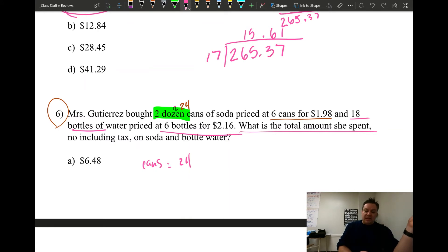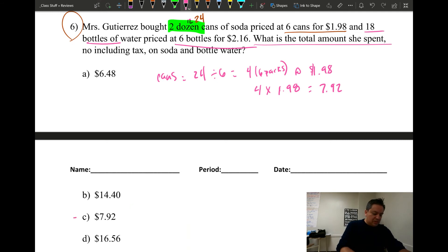Six cans of soda for $1.98. She bought 24 cans, so we need to do something right there before we know how much she spent for soda, and then something similar for the water. Because we know she got 18 bottles, but the price is six bottles for $2.16. So first of all, cans: 24. Now she's gonna pay $1.98 for six of them, for six cans, so we gotta divide this by six in order to know how many six-packs she got, right? When you divide that, you get four. Now four six-packs at $1.98 per six, right? So all we gotta do is multiply four times $1.98, and we're gonna get the price for the cans. So four times $1.98 gives me $7.92, and I can tell that's gonna be one of my answers down there. If I scroll down, see, look, that's gonna be one of my answers.